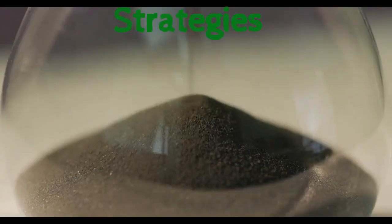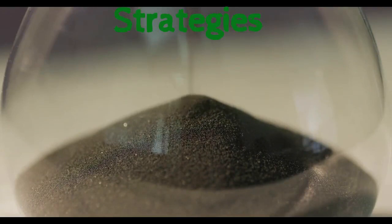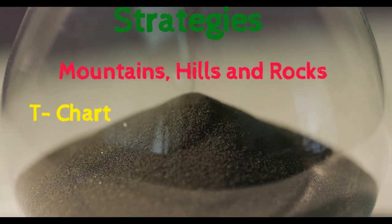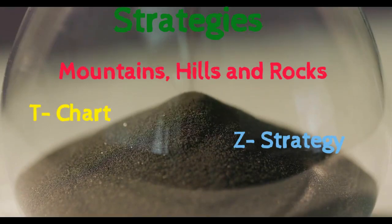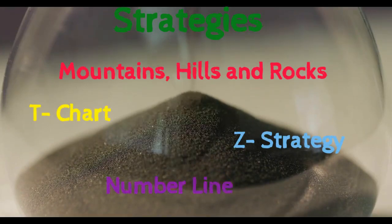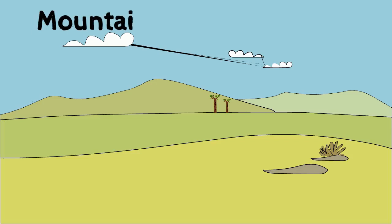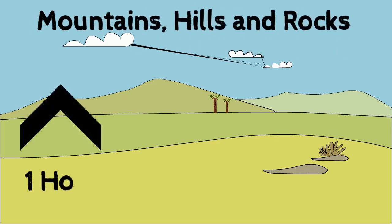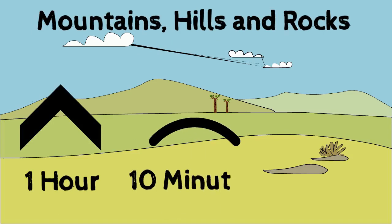There are many different strategies to calculate the duration of time or elapsed time, such as mountains, hills and rocks. Some people use a t-chart, z-strategy, or number line. Today I'm going to teach you how to use mountains, hills and rocks, where mountains equal 1 hour, hills equal 10 minutes, and rocks equal 1 minute.